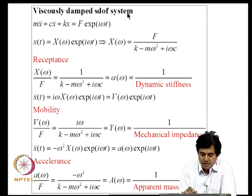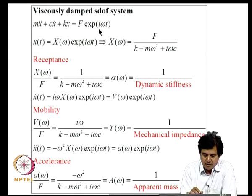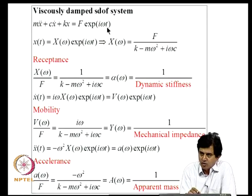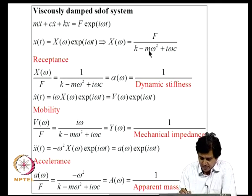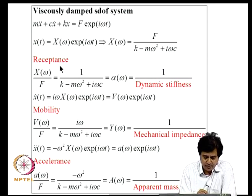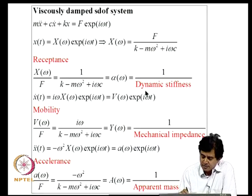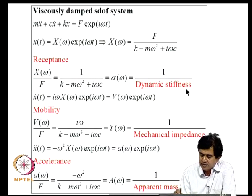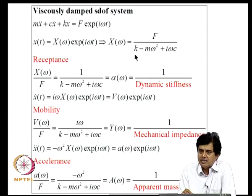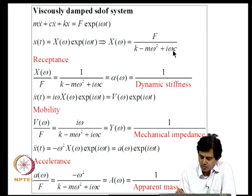For a viscously damped SDOF system driven harmonically by F·e^{i·omega·t}, in steady state the response X is also harmonic at the driving frequency with amplitude F divided by (K - M·omega^2 + i·omega·C). The receptance alpha(omega) is defined as displacement per unit force. The dynamic stiffness is the reciprocal of receptance, equal to K - M·omega^2 + i·omega·C. When omega = 0, the dynamic stiffness equals the static stiffness K; for nonzero omega, it includes inertial, dissipation, and frequency effects — hence the term dynamic stiffness.